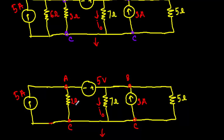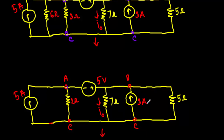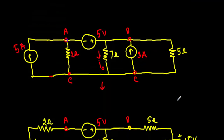Taking the equivalent parallel resistance of the 6 ohm and 3 ohm, I get a value of 2 ohm. Now between terminals A and C, a 5 ampere current source is connected in parallel with a 2 ohm resistor, and a 3 ampere current source is connected in parallel with the 5 ohm resistor. We will now convert each of these current source-resistance combinations into a voltage source with a series resistance.